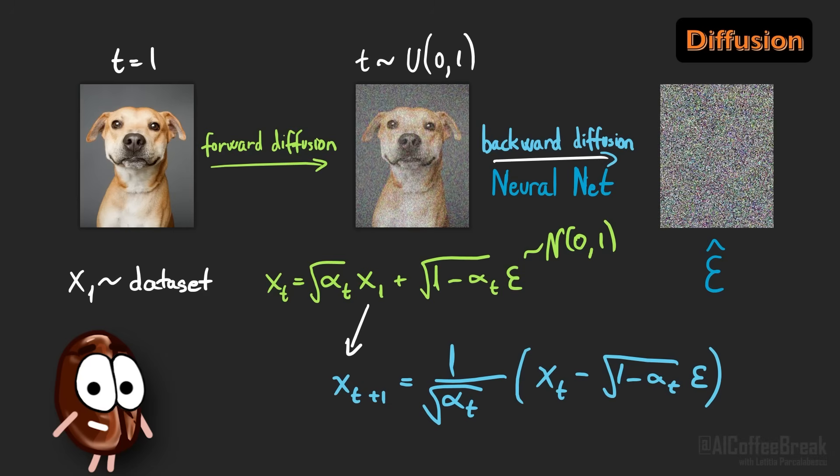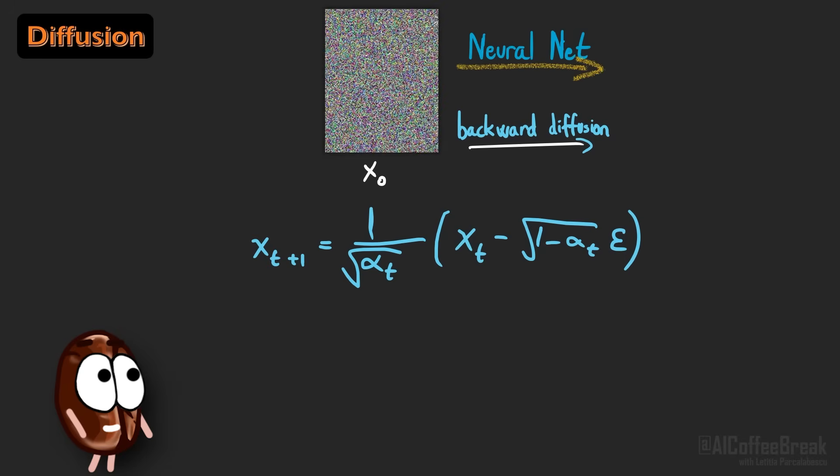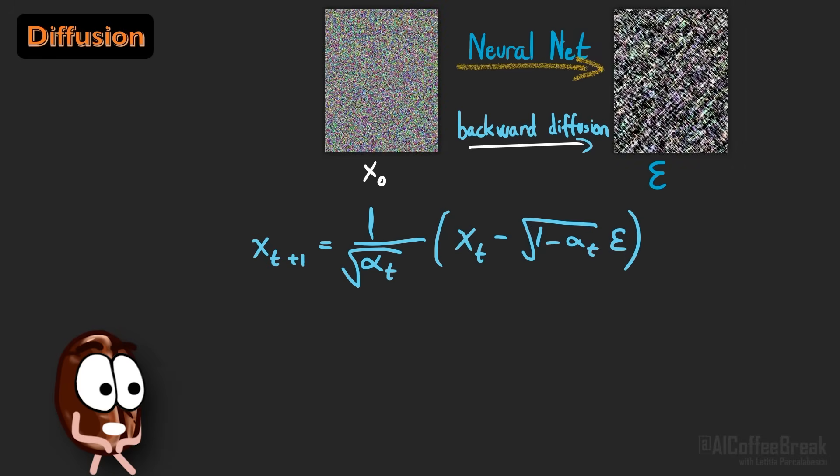In other words, all we did here is pulling x1 to the left hand side and rename it to xt plus 1. That's it. It's just the same equation turned around and feel free to do this exercise on paper. And with this backward diffusion formula, we can now start the image generation process. We begin by giving our trained diffusion model a completely noisy image as input, and we let the model predict the noise present in the image.